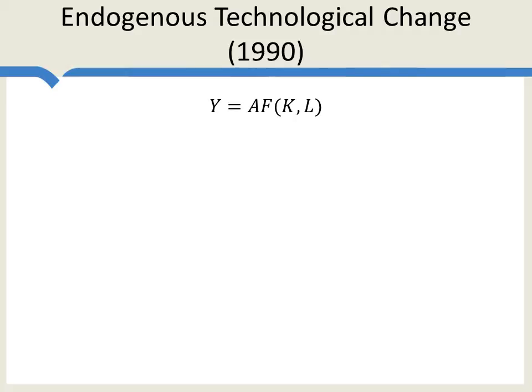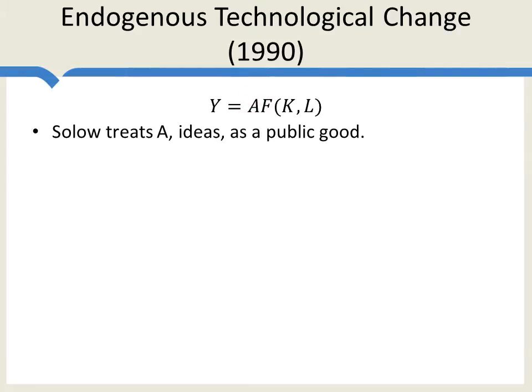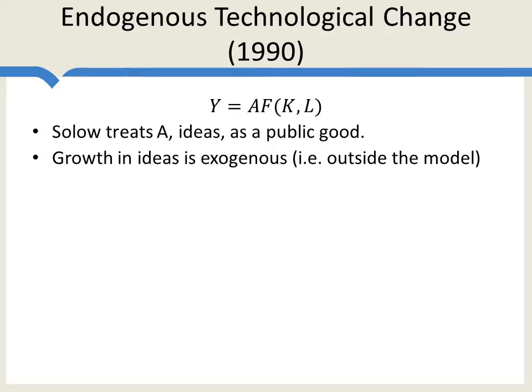Let's remember the Solow Model. In the Solow Model, output is a function of A, which is ideas, and a combination of capital and labor. Solow made two assumptions about ideas, A. First, ideas were a public good — they were freely available to anyone in the world. Second, the growth in ideas was exogenous, that is, outside the model.